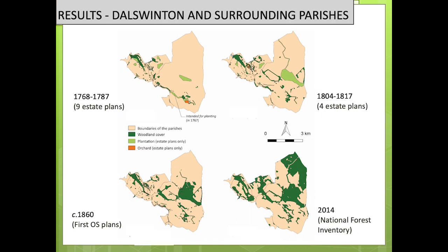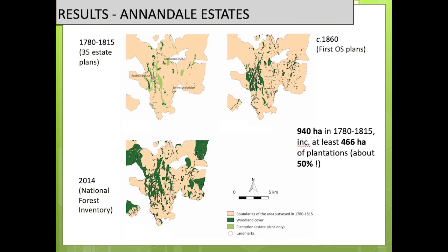If we look at Dalswinton, a little bit south from Drumlanrig, we again observe exactly the same trend — with a lot of woodland mentioned as plantation by William Crawford, and even more plantation in the early 19th century. For the record, one area was intended for planting but never appeared afterwards, so I think it was never planted in the end. And Annandale Estate shows the same pattern — lumping together historical estate maps from 1780 and 1815, we see a lot of plantations of woodland everywhere, accounting for about 50% of the woodland cover.